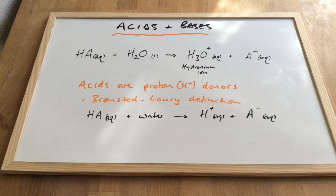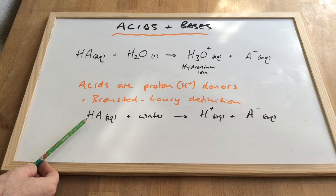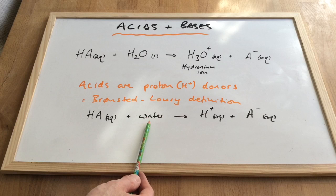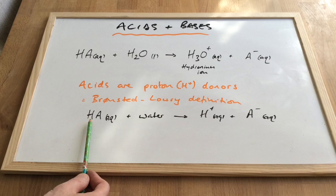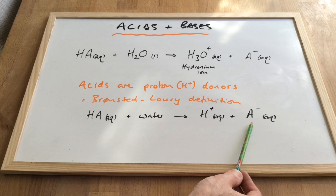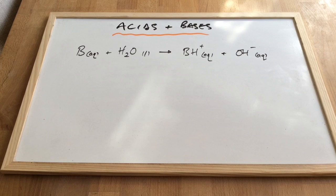There are other definitions of acids and bases, but we are going to use this one for the A-level exam. Underneath I've got a very simplified version of this equation, where I've taken H2O out and just put water in. You can see that the HA, the acid, is donating its H+ ion, its proton, and it's left with the A- ion.